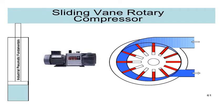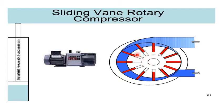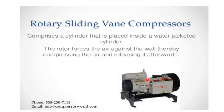Next is the sliding vane rotary compressor. It consists of a cylindrical block with radial slots, mounted inside a circular casing with an offset. The vanes are inserted in the radial slots and are always held against the casing by centrifugal force or spring force. When the rotor rotates, air is drawn from the atmosphere, gets trapped in the pockets between the rotor and vanes and casing, and is carried from the inlet to the outlet.